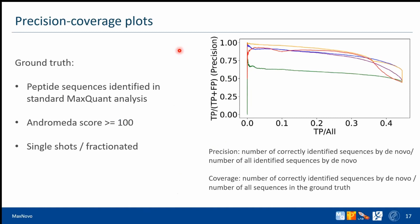For further analysis, we used a precision-coverage approach. As ground truth, we defined peptides identified with Andromeda in single shot and fractionated experiments with an Andromeda score higher than 100. Correctly identified de novo peptides are those that we can find in the ground truth. Precision is the number of correctly identified de novo peptides divided by the total de novo identifications, and coverage is the number correctly identified by de novo divided by all sequences in the ground truth.